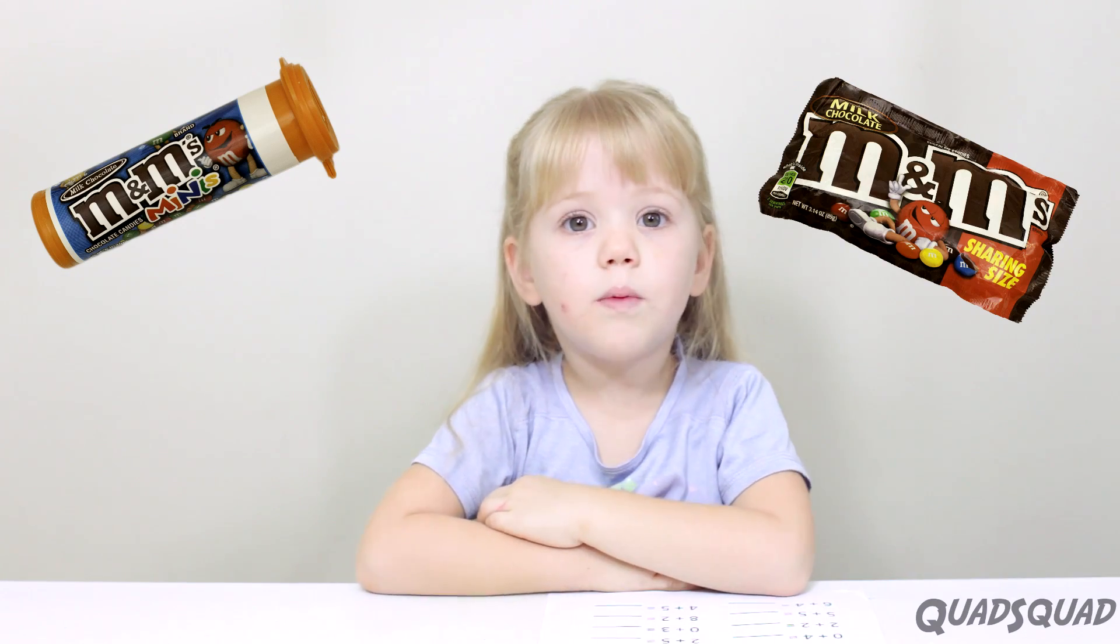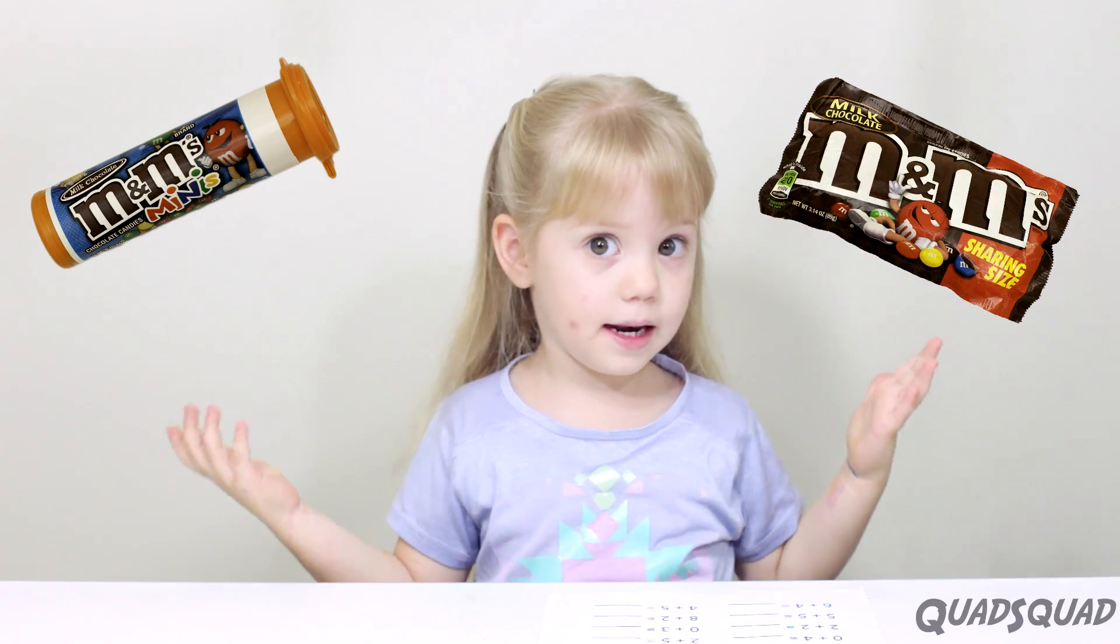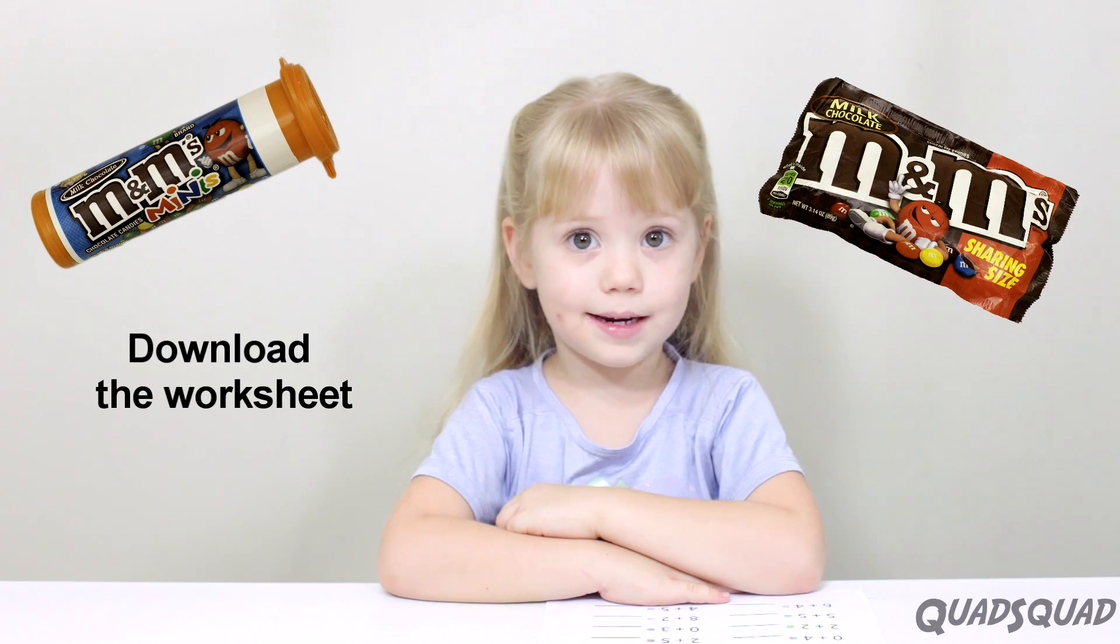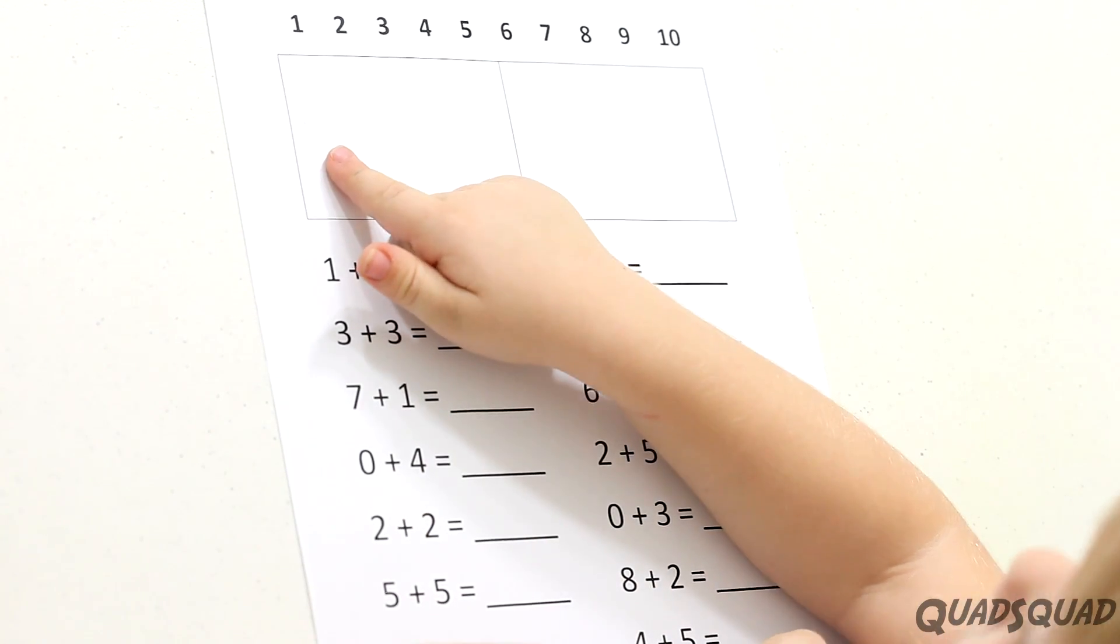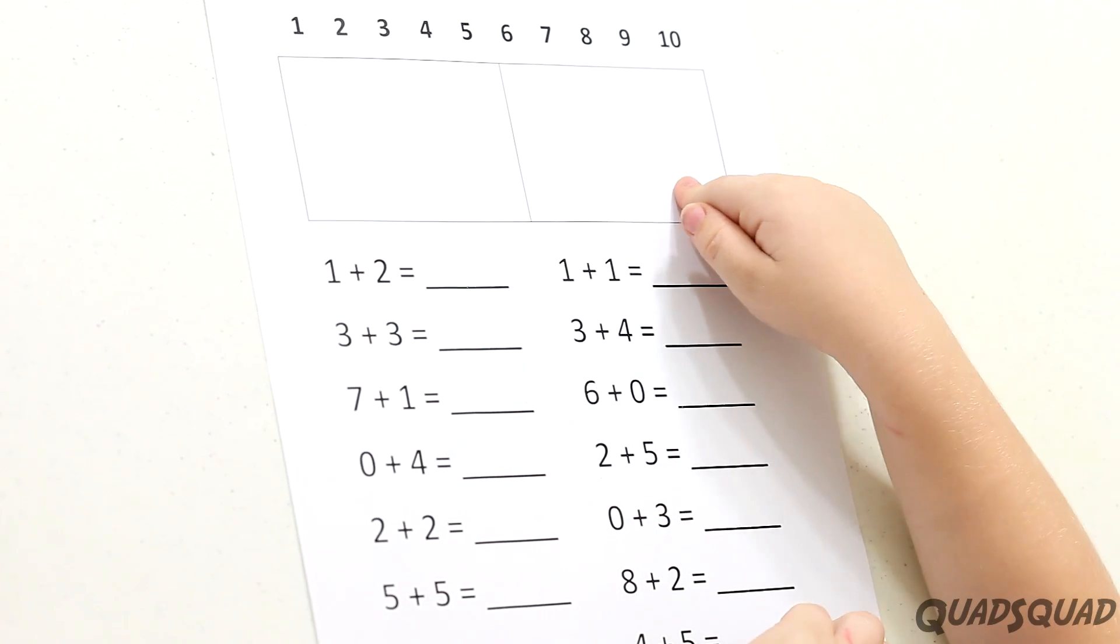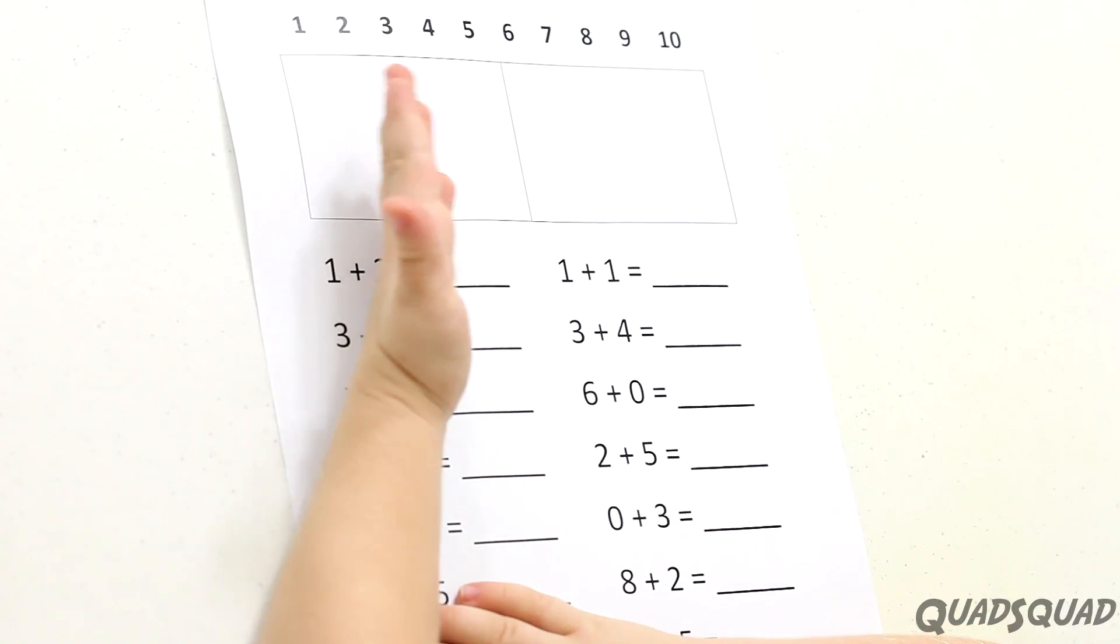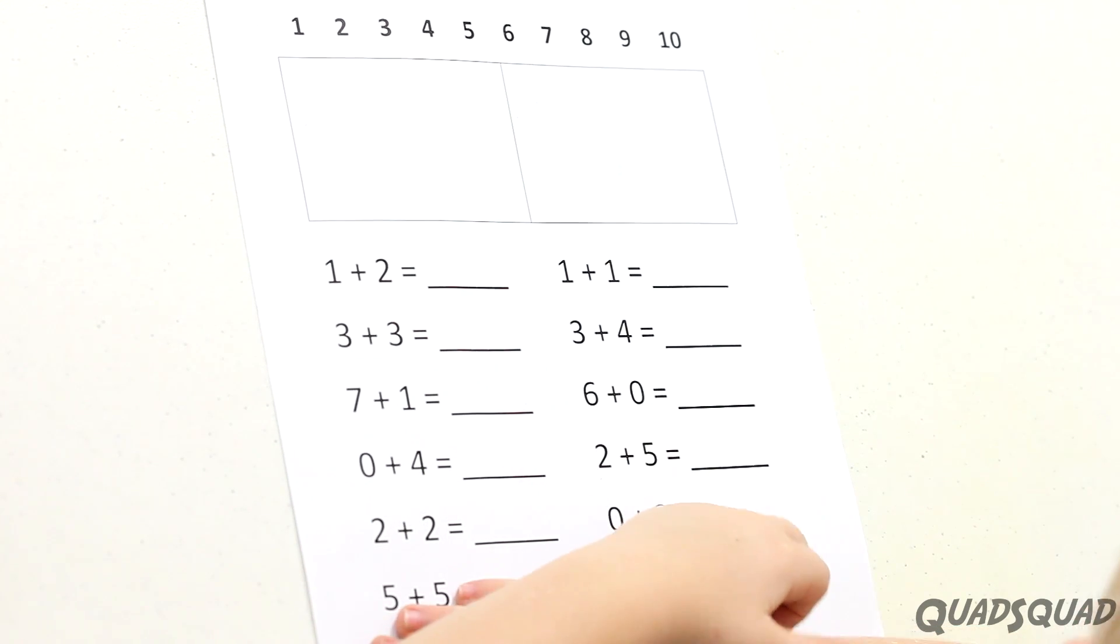Hi, my name is Ashley. Welcome to adding M&M's. Today, we're going to add M&M's. Let me show you my paper. So I got one box for some M&M's and two boxes for the other M&M's. At the top, I have all the numbers in case I forget how to write them.